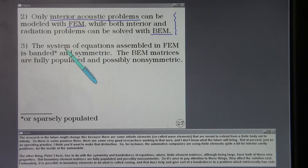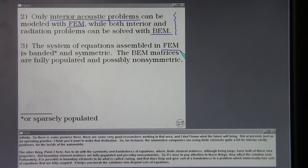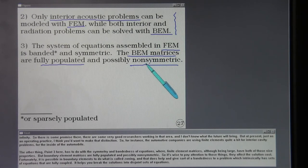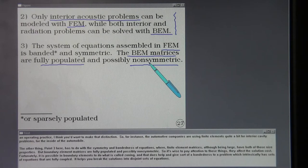The other thing, point three here, has to do with the symmetry and bandedness of equations where finite element matrices, although being large, have both of those nice properties. But boundary element matrices are fully populated and possibly non-symmetric. So it's wise to pay attention to those things. They affect the solution cost. Fortunately, it is possible in boundary elements to do what's called zoning. And that does help and gives sort of a bandedness to a problem which intrinsically has sets of equations that are fully coupled. It helps you break the solutions into disjoint sets of equations.